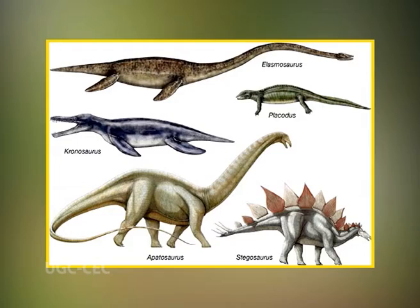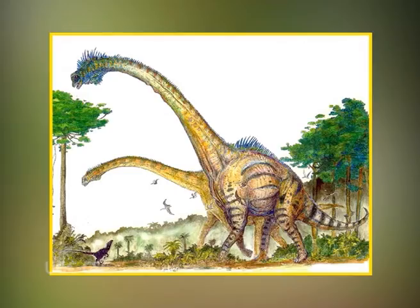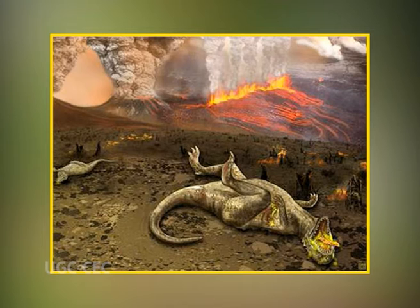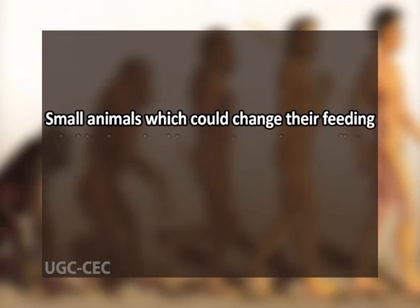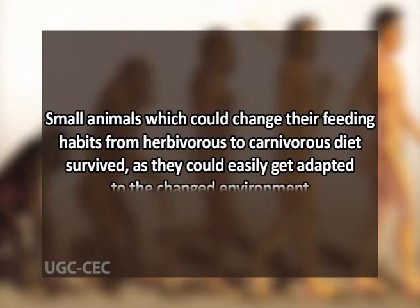To explain the phenomenon of survival of the fittest, the extinct reptiles can be cited as an example. During the evolution of reptiles, giant reptiles like the dinosaurs appeared. The majority of them were herbivores, but due to certain climatic changes the vegetation disappeared and therefore most of them became extinct. However, small animals which could change their feeding habits from herbivorous to carnivorous diets survived because they could easily adapt to the changed environment. Darwin called this natural selection and implied it as a mechanism of evolution.